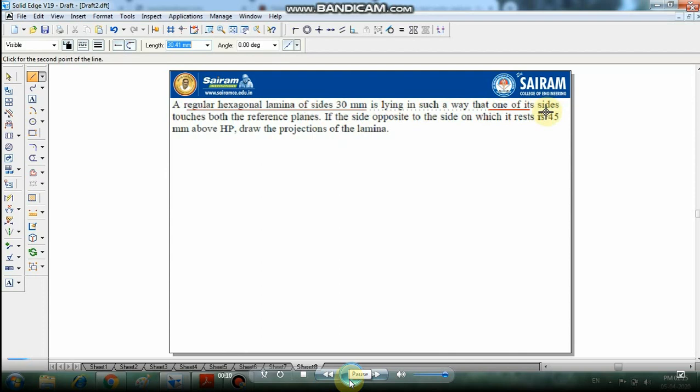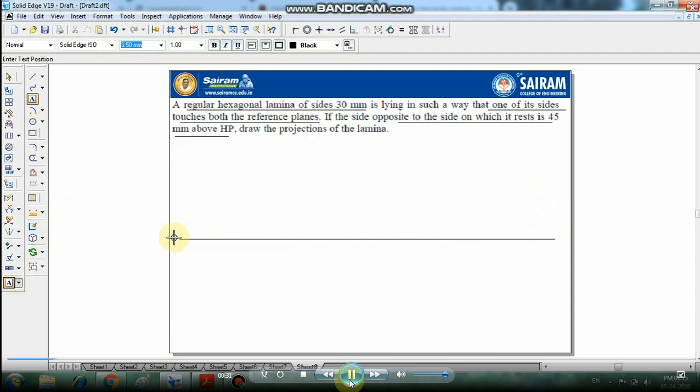Let me see, a regular hexagonal lamina 30 mm rests on one of its sides touching both the reference planes, and the opposite side rests 45 mm above HP. First, let me draw the XY reference line. Draw XY with the help of the line command and text XY, VP, HP below the reference line.